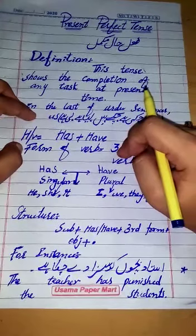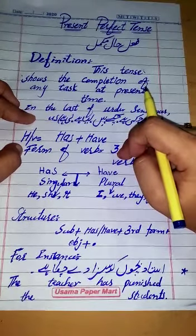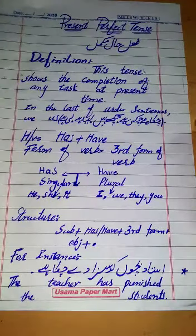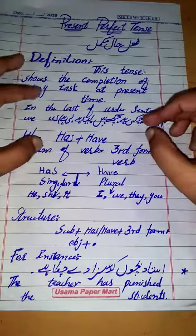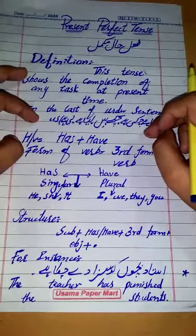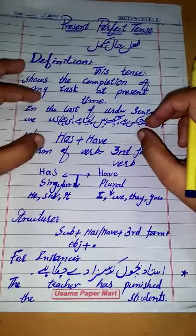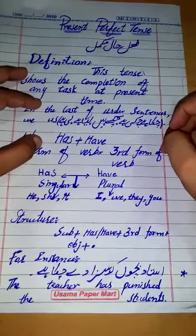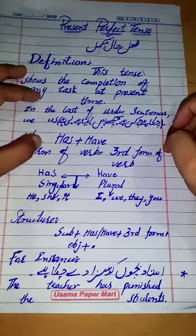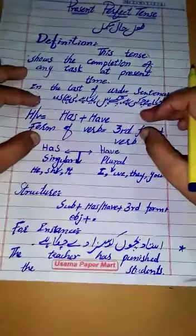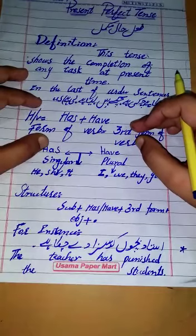For the verb form — in present continuous tense we used the first form plus 'ing.' But here in present perfect tense, the form has changed. We will use the third form of the verb with helping verbs 'has' and 'have.'